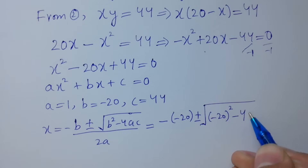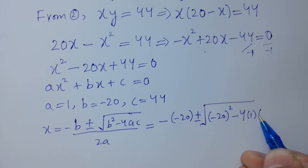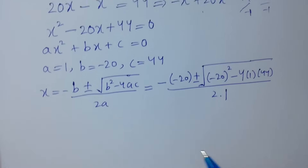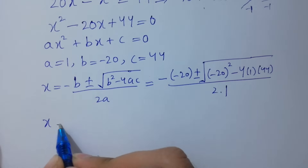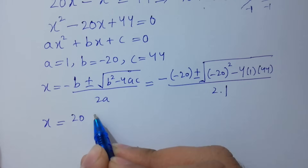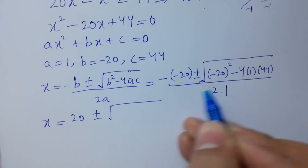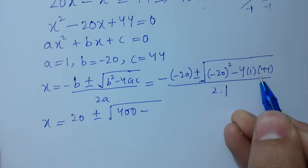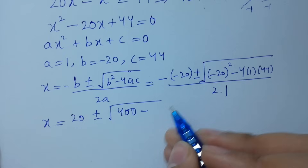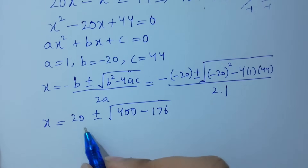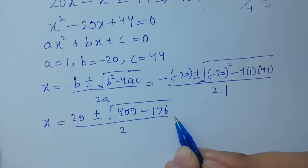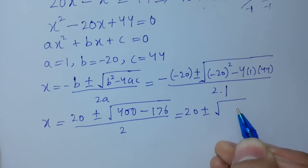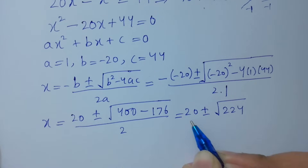With a equal to 1 and c equal to 44, over 2 times a equal to 1. We get x equal to minus(minus 20) plus or minus square root of 400 minus 4 times 44, over 2. That gives 20 plus or minus square root of 400 minus 176, which is 224, over 2.